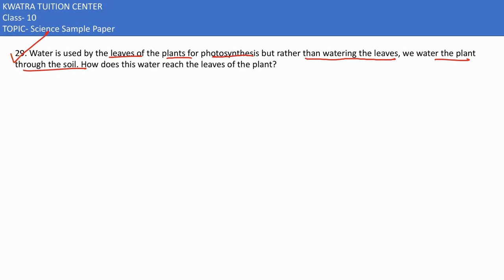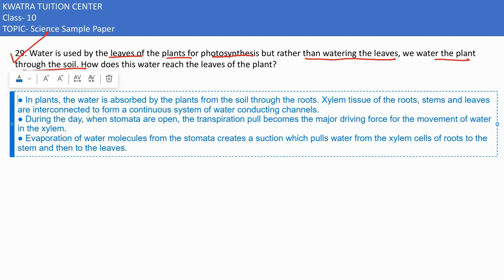This is very simple to answer. Xylem is there in the roots, so they take up all the water towards the parts of the plant. In plants, the water is absorbed by the plants from the soil through the roots. Xylem tissue of the roots, stems, and leaves are interconnected to form a continuous system of water conducting channels.